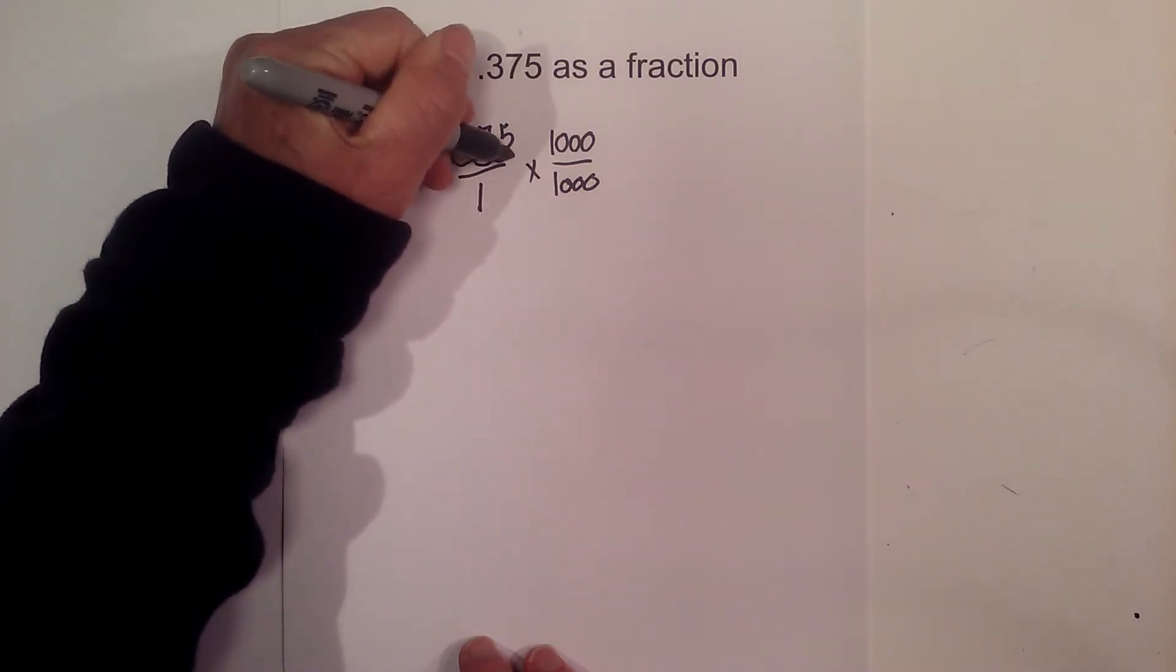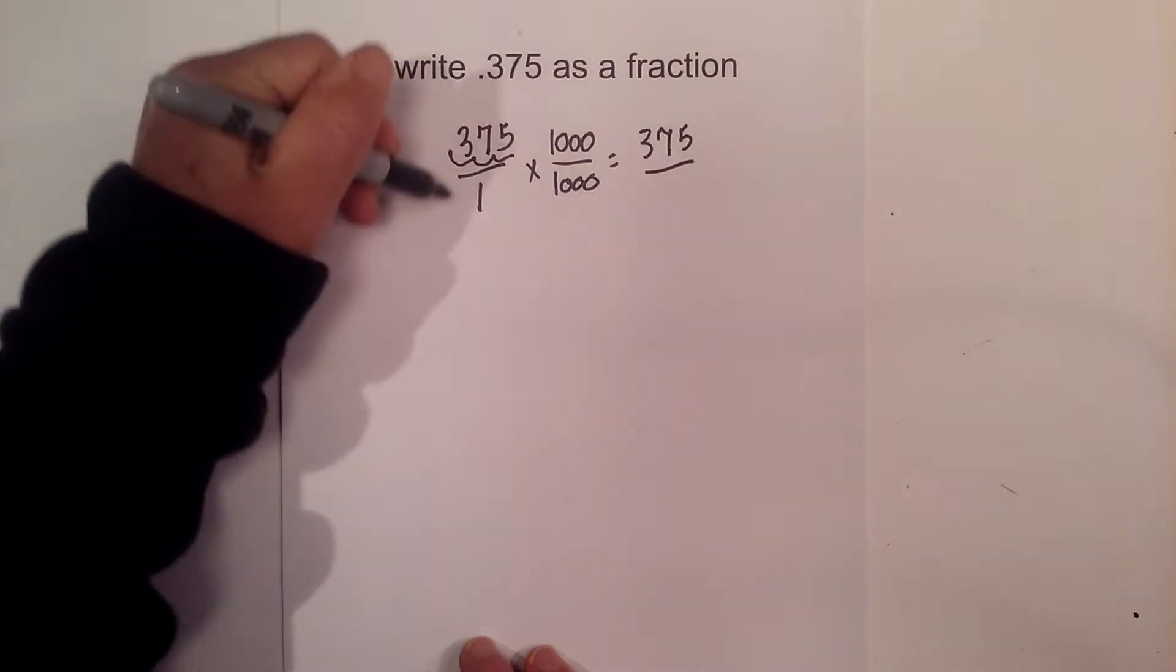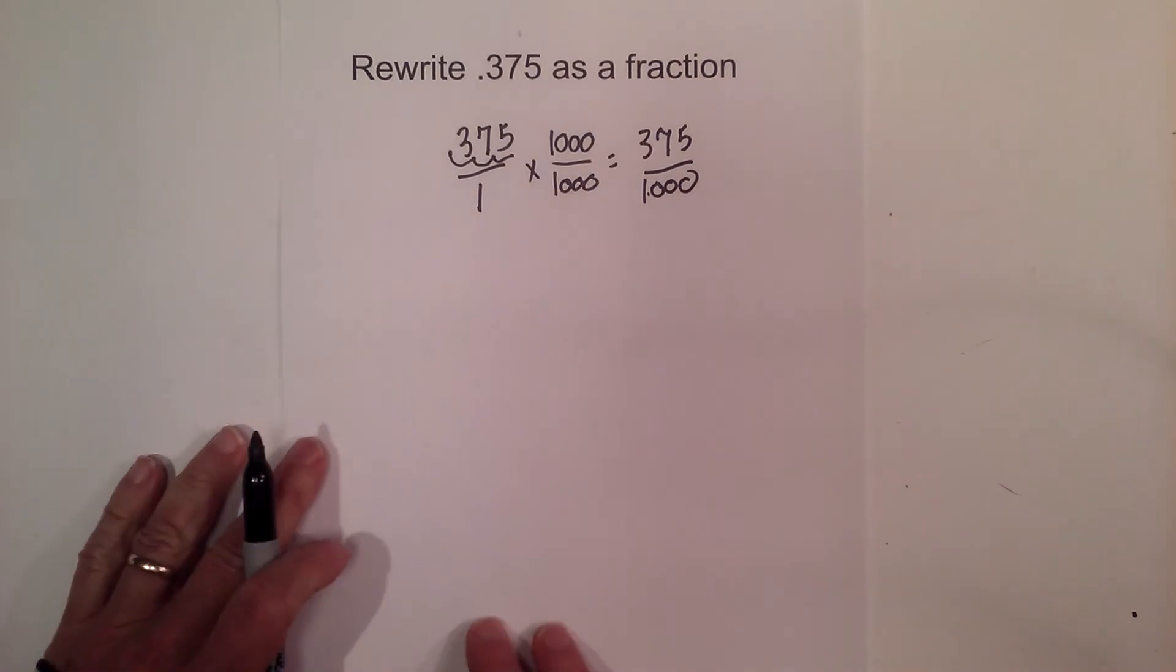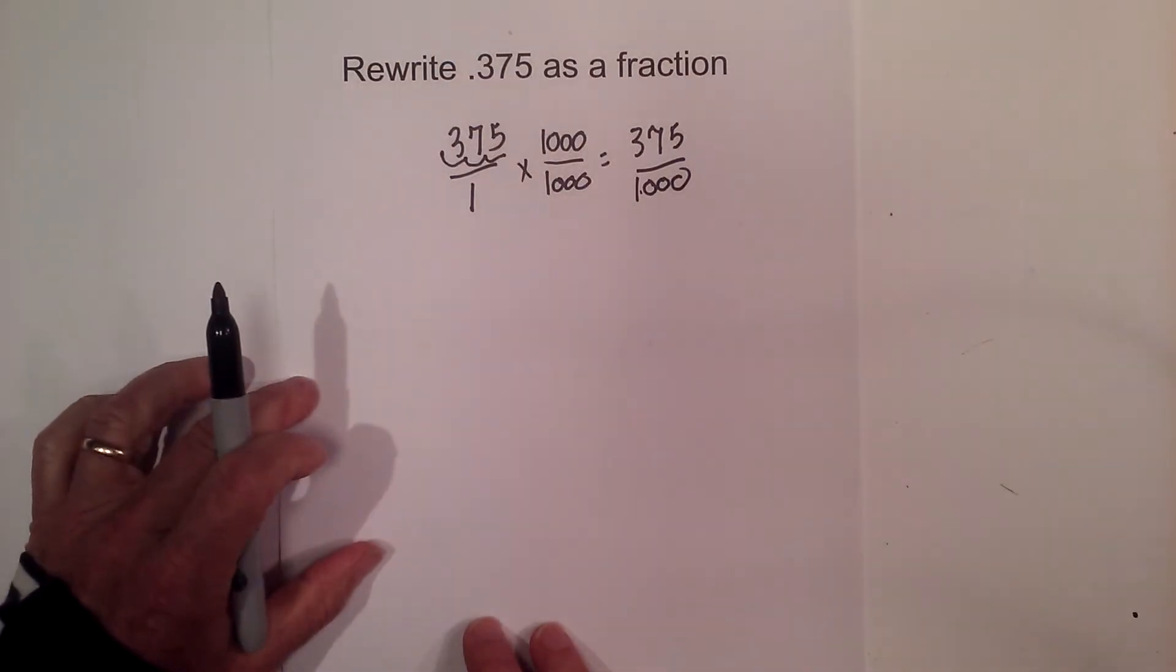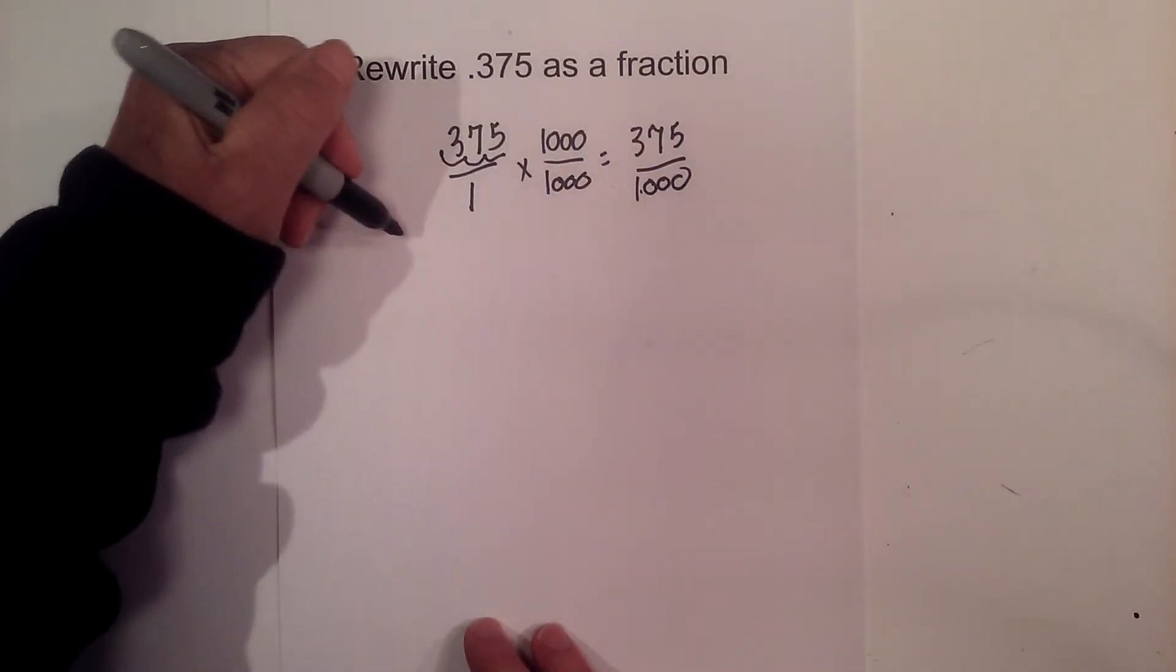I'm just 1, 2, 3, that equals 375. And 1 times 1000 is 1000. The next step is I need to reduce this fraction. And I can do that by finding a greatest common factor.